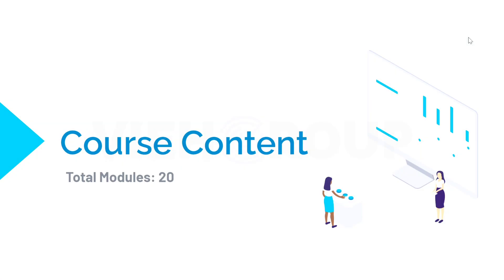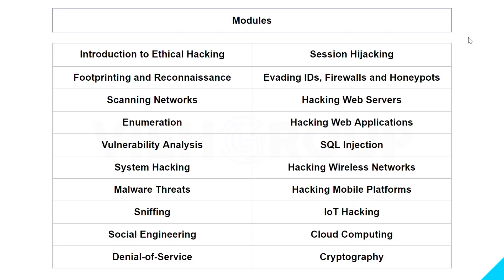The course content of this exam contains 20 modules. The first module is Introduction to Ethical Hacking — here you will see information security overview, cyber kill chain concepts, hacking concepts, information security controls, laws and standards. The second module is Footprinting and Reconnaissance, where you will learn about footprinting concepts, website footprinting, DNS footprinting, and network footprinting.